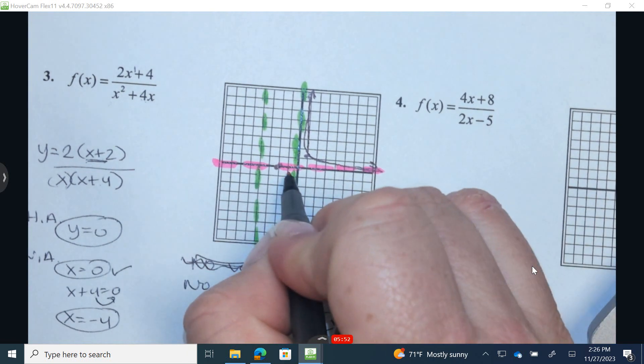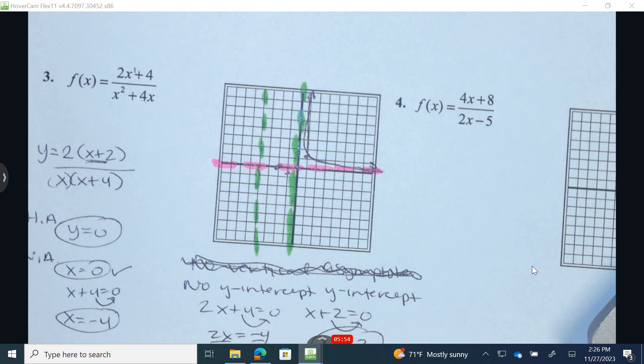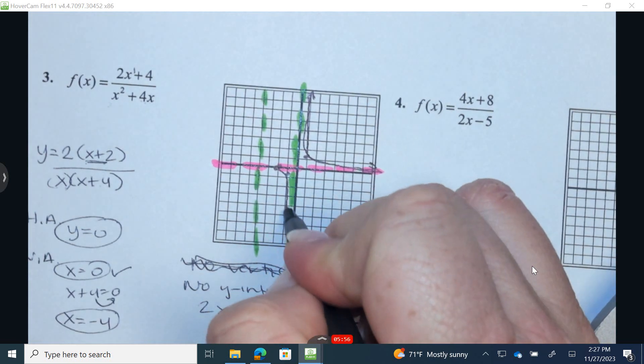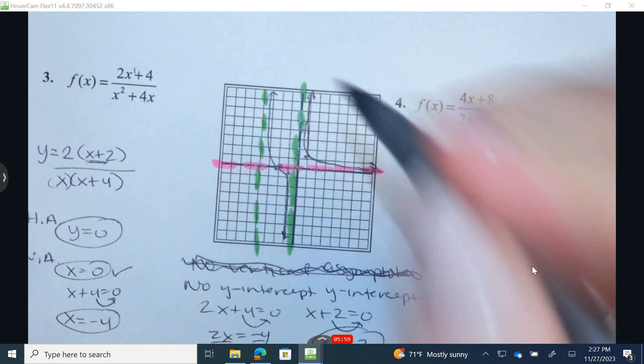So when I plug in negative 1, I get an output of negative 2 thirds. And that tells me that this graph is going to be going down to the right in this section and up to the left.